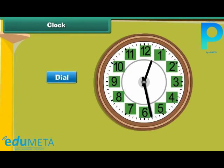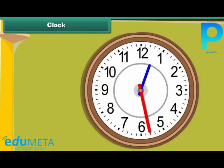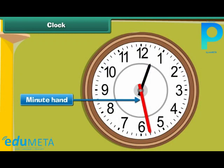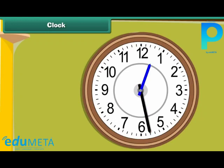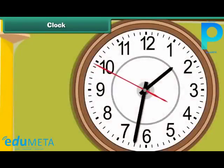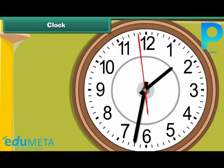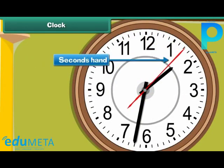These divisions are numbered from 1 to 12. The clock has two hands. The longer hand is called the minute hand, and it indicates time in minutes. The shorter hand is called the hour hand, and it indicates time in hours. Some clocks have a third hand — the thinnest and longest — called the seconds hand. It indicates time in seconds.